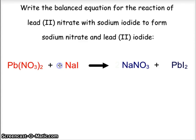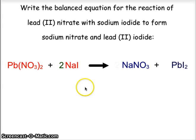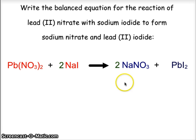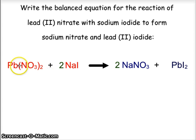To balance, we're going to add a 2 coefficient in front of the sodium iodide. That will balance our iodines on the reactant and product side. And we're going to add a 2 in front of the sodium nitrate to balance the nitrates and also the sodium. So now we have a balanced chemical equation.